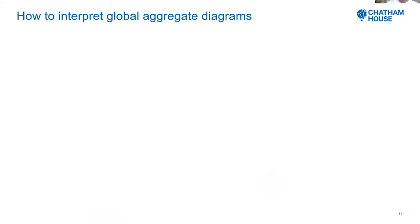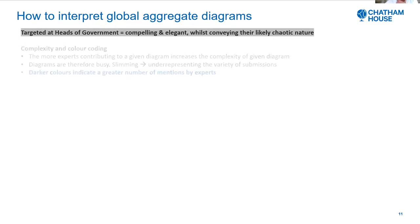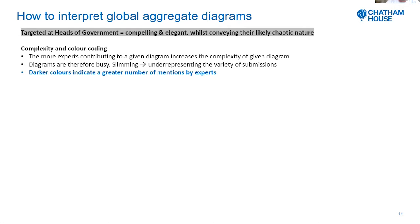Just quickly how to interpret the aggregated diagrams. They're targeted at heads of state or heads of governments, they need to be compelling and elegant while conveying their likely chaotic nature. In terms of complexity and colour coding, the more experts contributed to a given diagram, the greater the complexity of that diagram — hence diagrams are somewhat busy. However, slimming 10 or 20 diagrams into one diagram ran the risk of underrepresenting the variety of submissions by different experts. We handled this by colour coding them, with darker colours indicating a greater number of mentions by those experts.